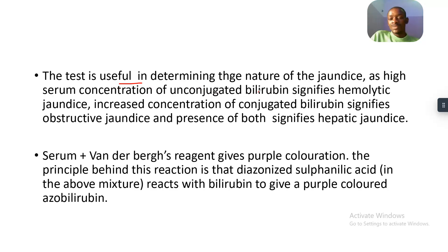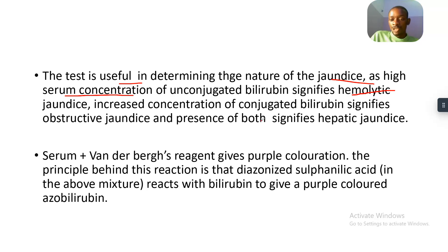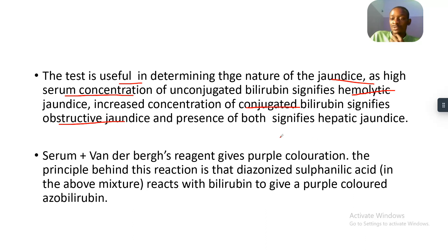The test is useful in determining the nature of the jaundice. A high serum concentration of unconjugated bilirubin signifies hemolytic jaundice. An increased concentration of conjugated bilirubin signifies obstructive jaundice, and the presence of both signifies hepatic jaundice.